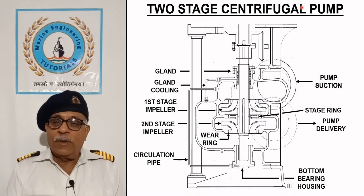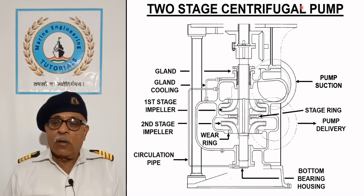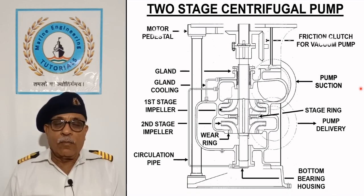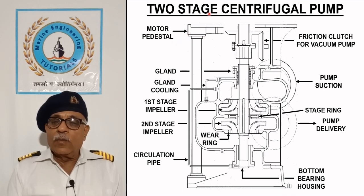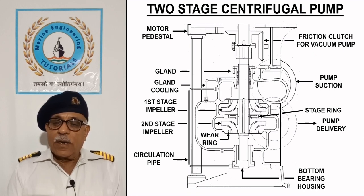Occasionally these pumps are equipped with a changeover cord to use the two impellers in parallel when high capacity is desired; the normal position of the impellers is in series for high head. Multi-stage single entry centrifugal pumps are used for high pressure applications such as boiler feed pumps, fire pumps, reductor drive and deep well cargo pumping. The motor is fitted on a pedestal and connected to the pump with a flexible coupling; a friction clutch is provided for operation of the vacuum pump to prime the main pump.